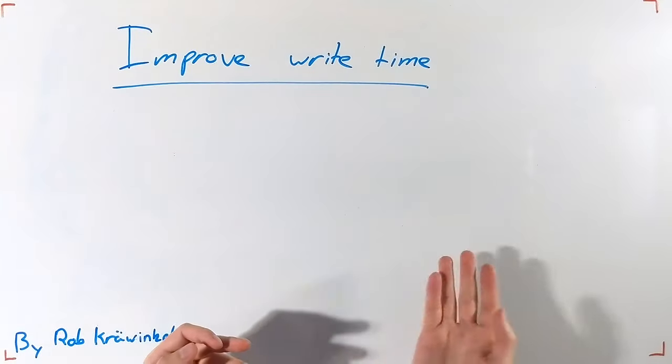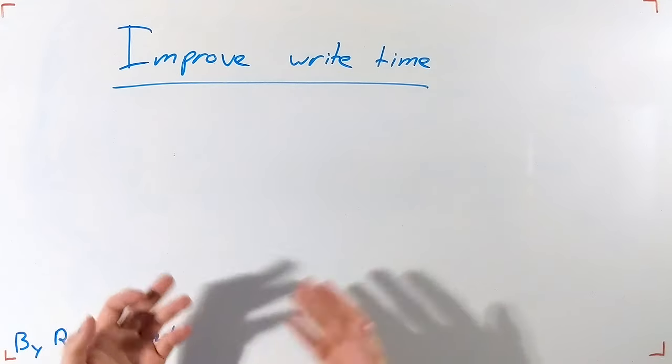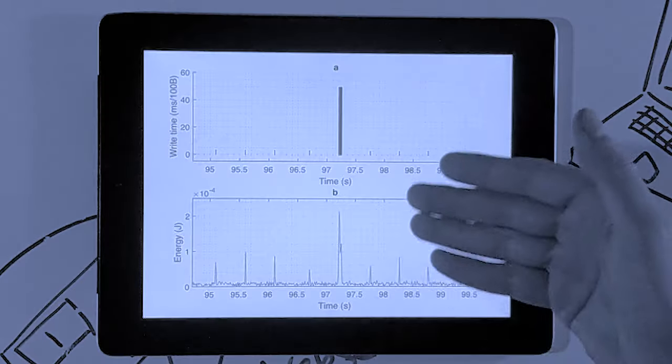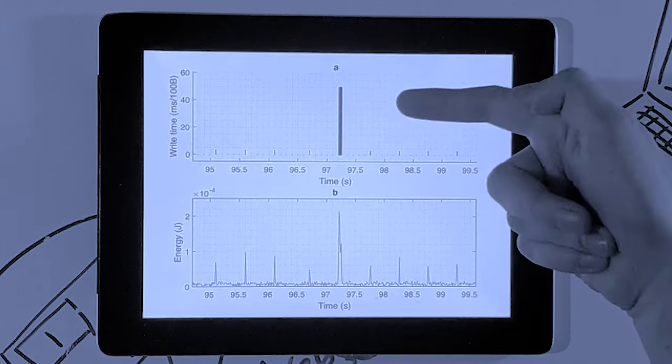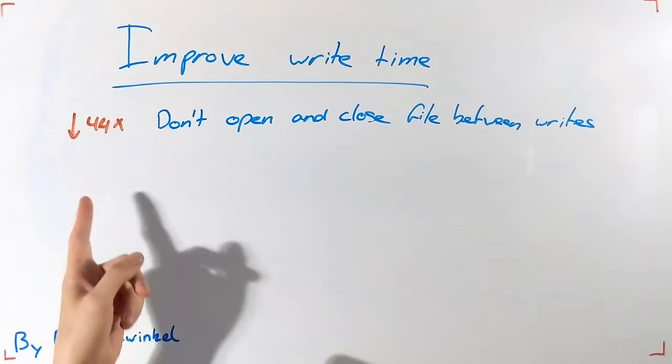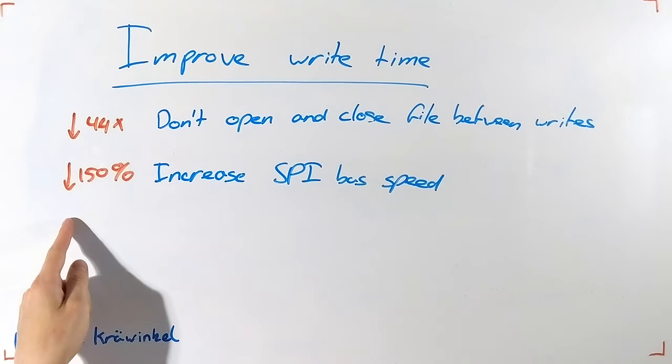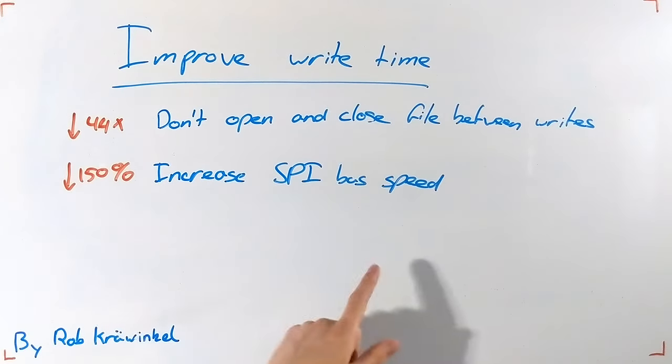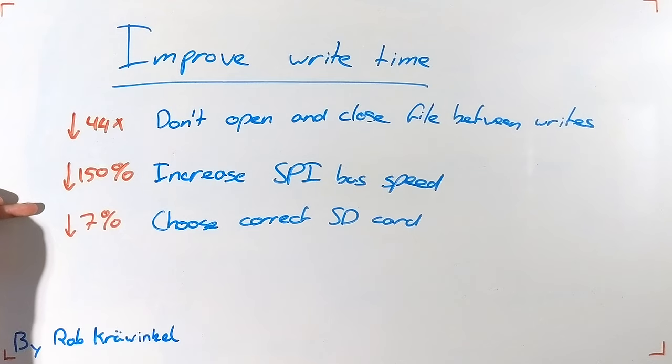There are ways to speed up the general transfer to the SD card, though. None of these methods lower the peaks below 50 milliseconds per 100 bytes that are shown here. Not opening and closing the file between writes makes it 44 times faster. A further 150% can be gained by increasing the SPI bus speed, and 7% by choosing the right SD card.